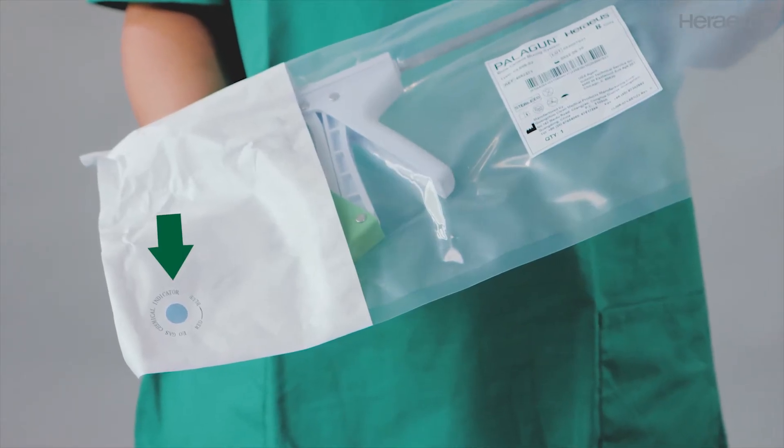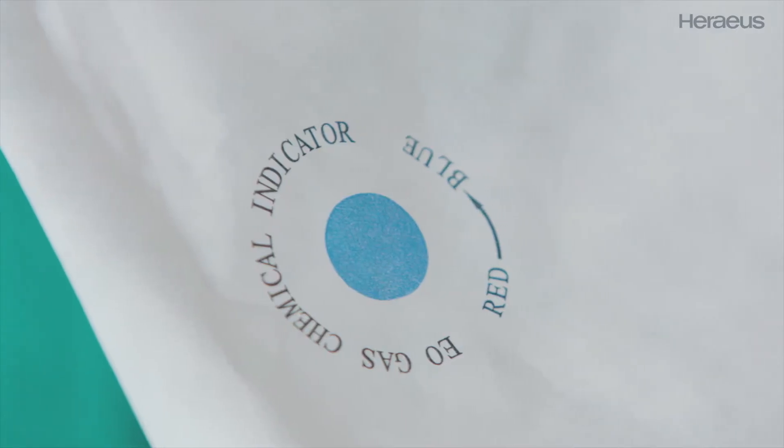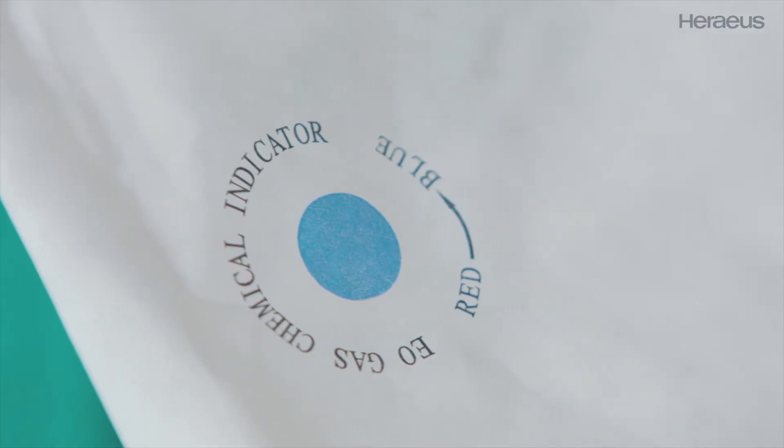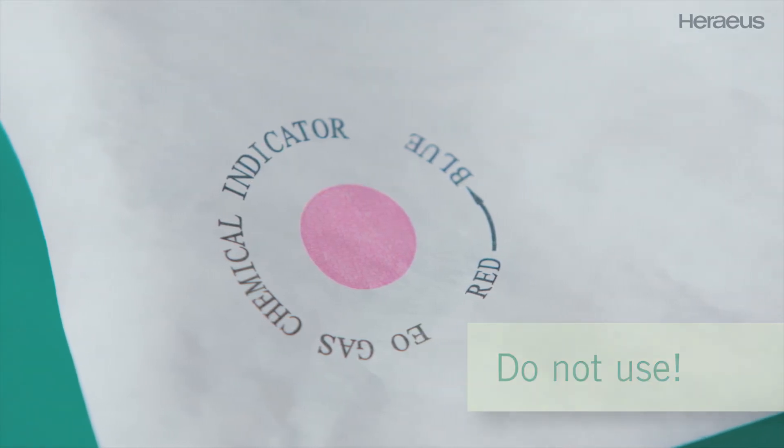The inner pouch has a sterile indicator located on the white Tyvek. When the indicator is colored blue, the contents are sterile. If the indicator is colored in red, this product is unsterile and must not be used at all.